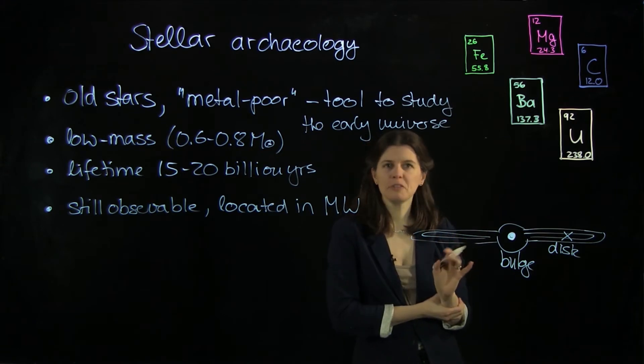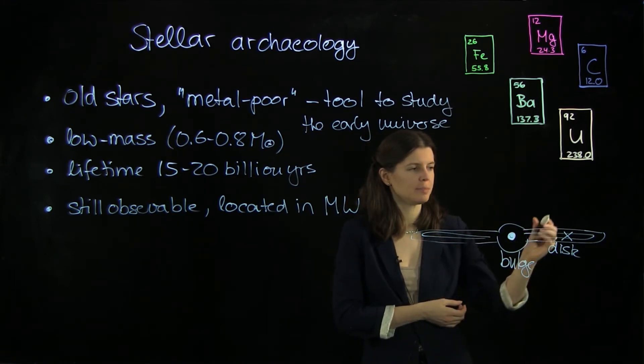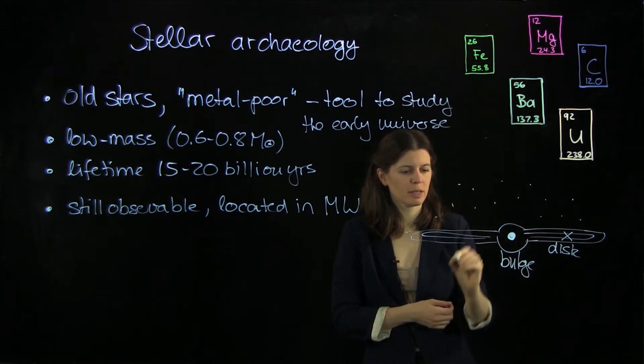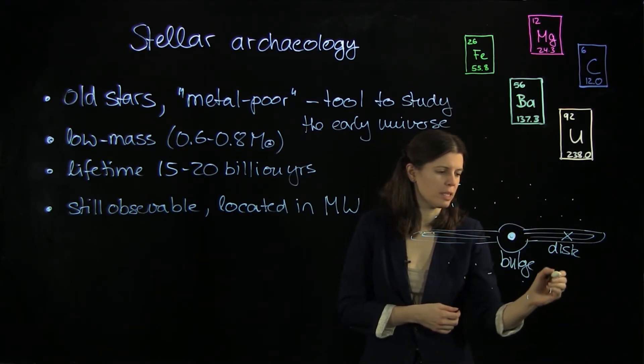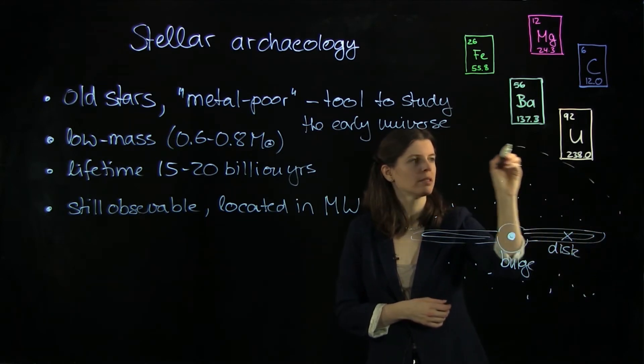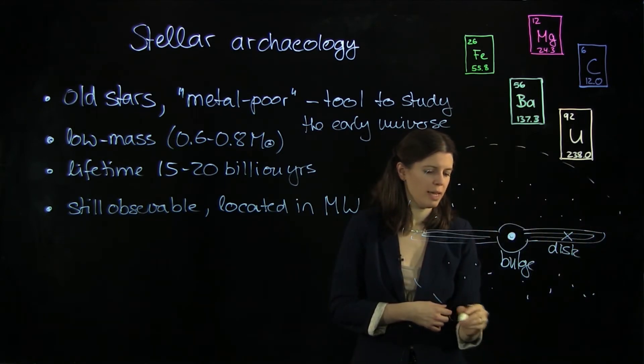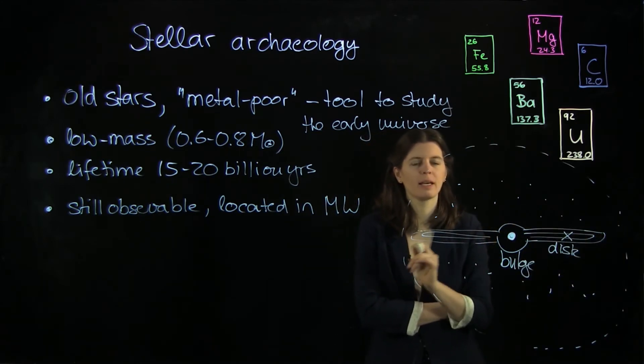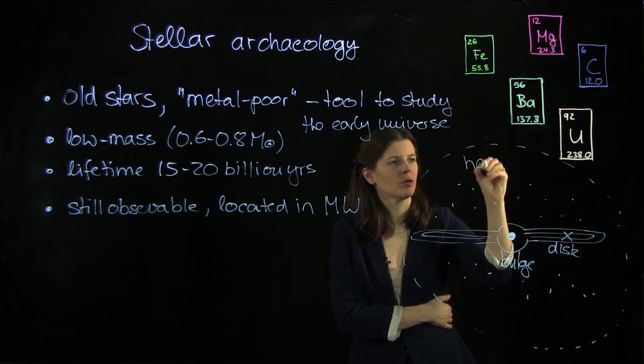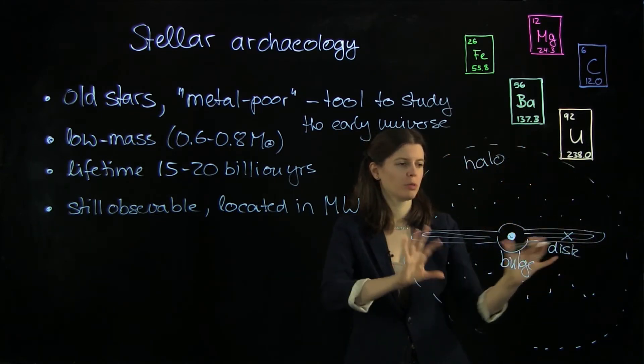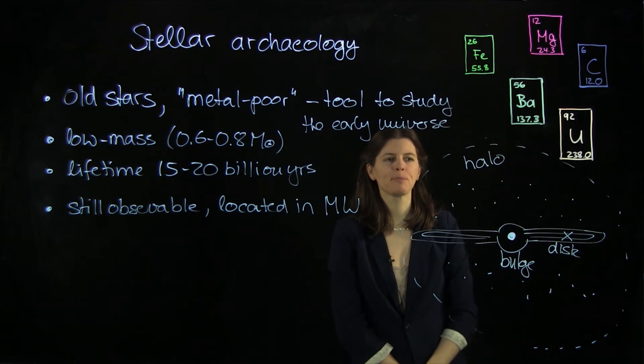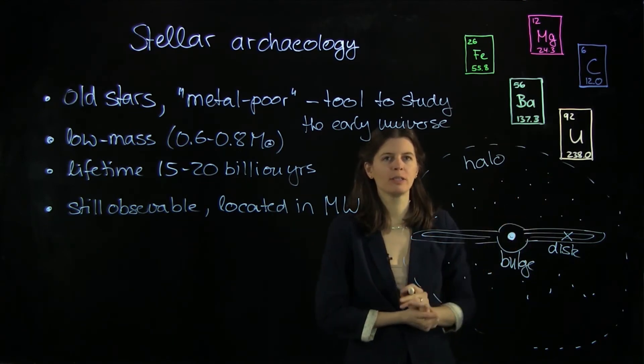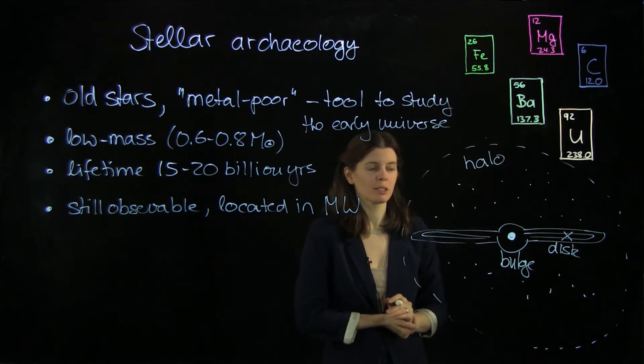But we look in a different place for the older stars because they are kind of located up here and below the disk in something that's called the halo. It's actually much larger than what I'm drawing right now. And so that's called the halo of the disk. It's a spherical envelope of the disk here. And all the old stuff is parked there. It's a bit of a junkyard.